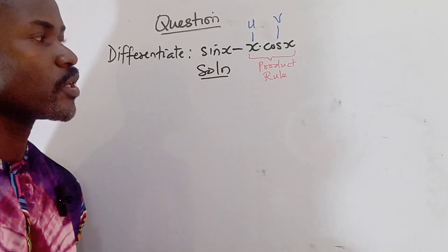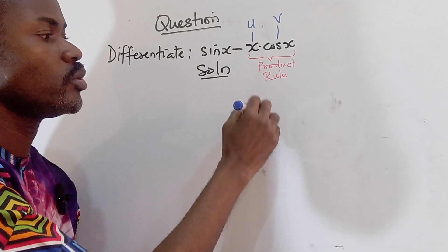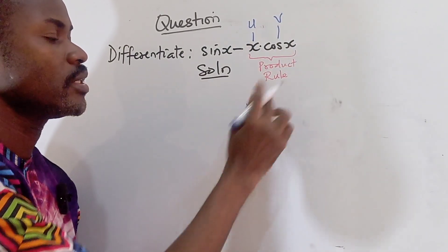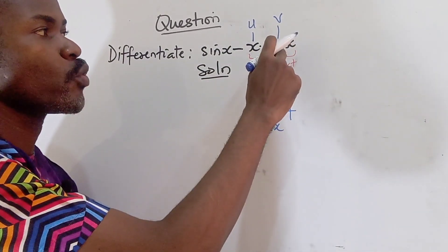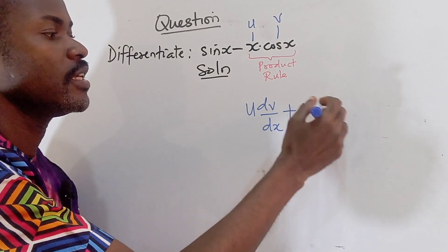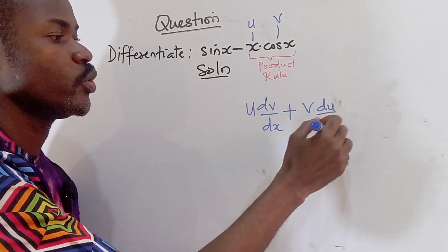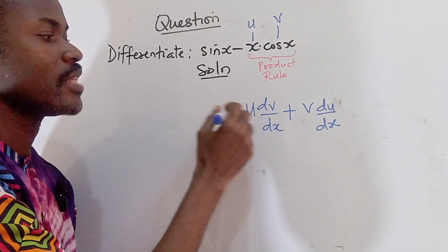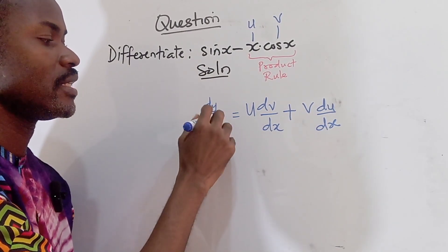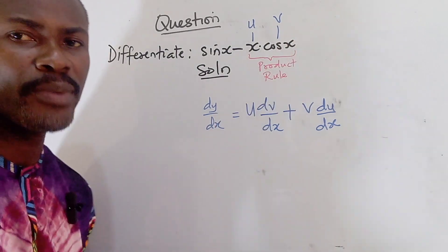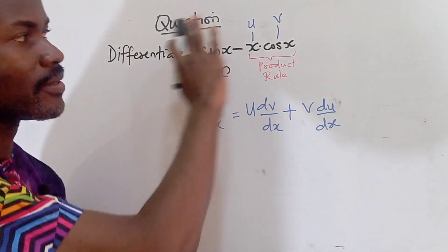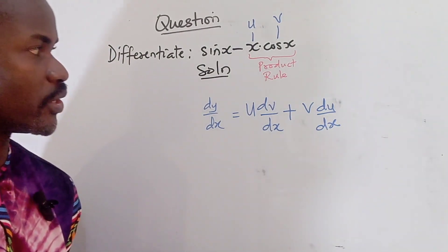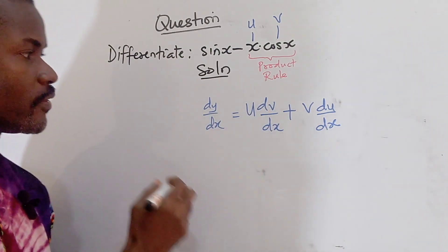Of course, the product rule is that you keep u, you differentiate v with respect to x plus you keep v and you differentiate u with respect to x. So that gives us our dy over dx of this part. Let's express the whole expression in differential form.